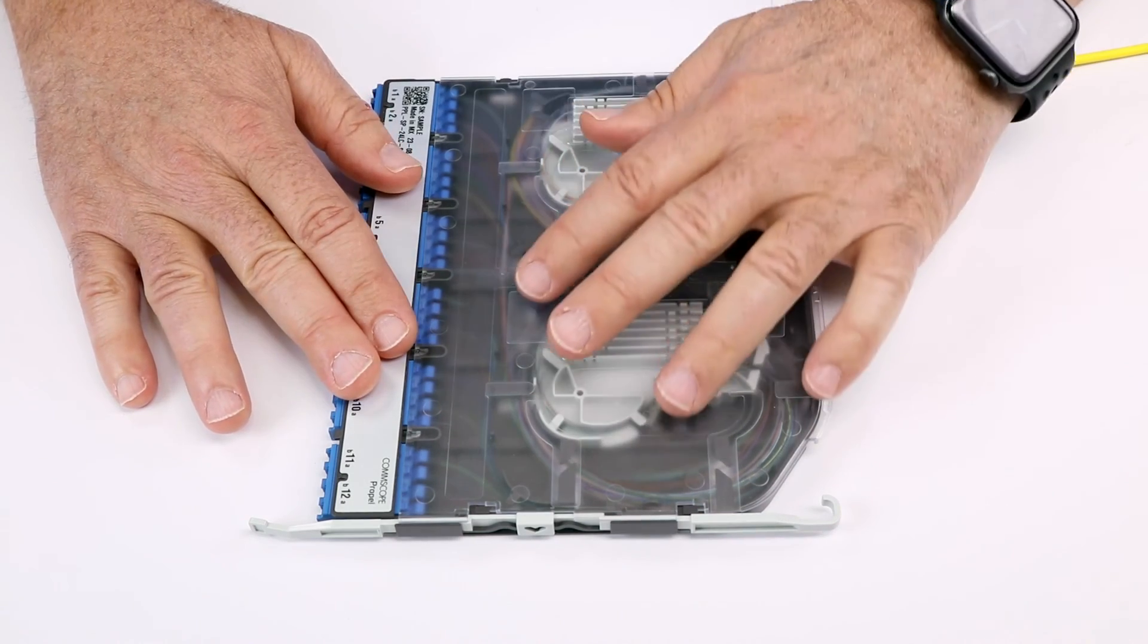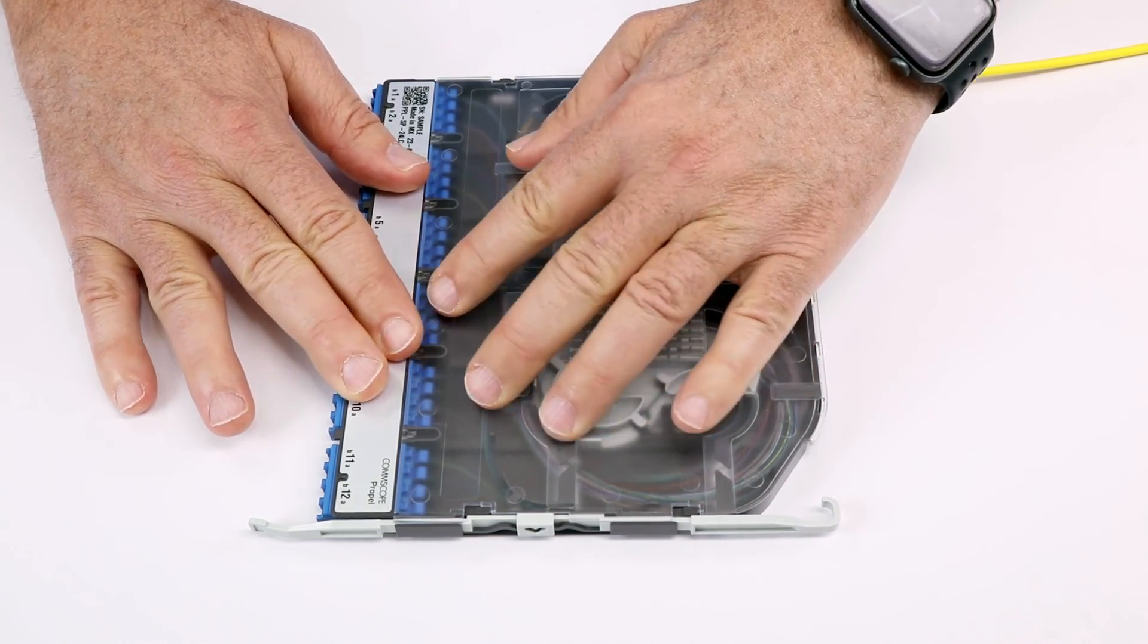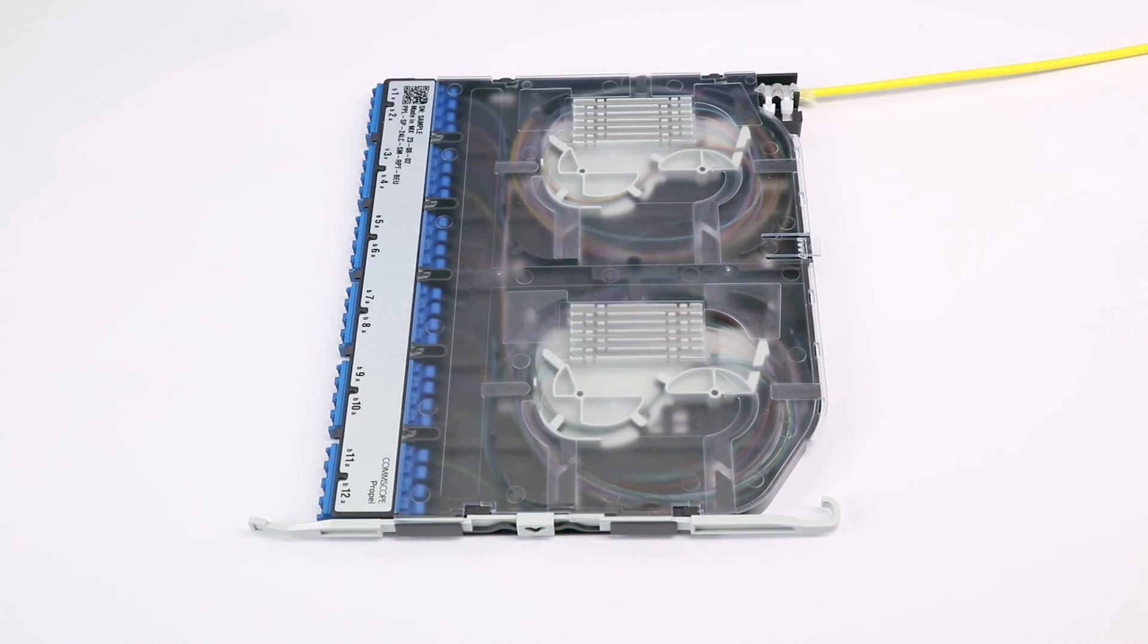With one hand holding the cassette base, push the cover forward with the other hand to engage the tabs. Double check the rear tab is also engaged to prevent the cover from sliding off.